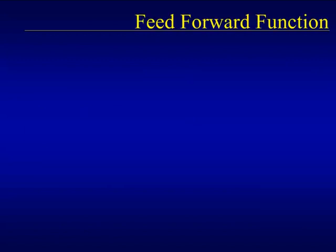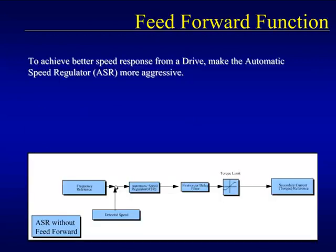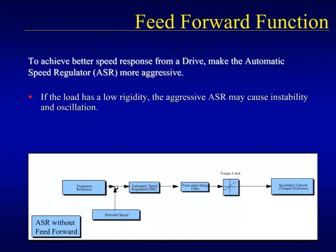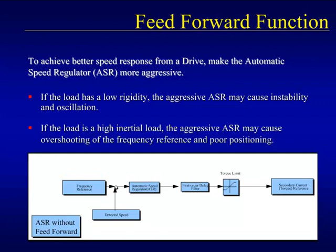The automatic speed regulator, or ASR circuitry, is a PI circuit that regulates the drive output to achieve accurate speed regulation. In order to achieve tighter speed regulation, more aggressive ASR settings are required. If there is some play in the load, an aggressive ASR might cause oscillation in the output speed because the ASR will keep changing as it chases the inconsistent load. If the load has a large inertia, then an aggressive ASR will cause vibration and the drive's output frequency will probably overshoot the intended speed.